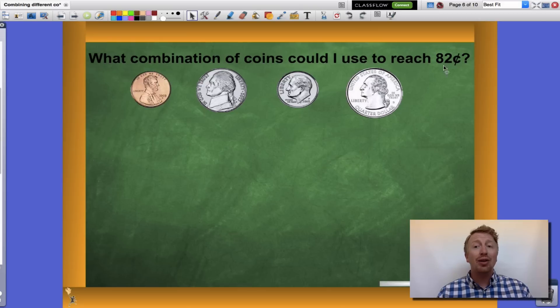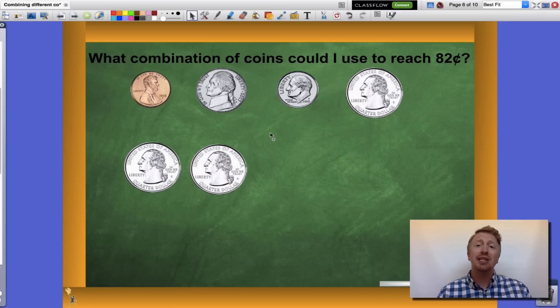Well, now that our value, 82 cents, has gotten much larger, there are way more ways that we can get there. I'm going to start with my largest denomination or value, which are quarters. Now three quarters together gets me to 75 cents: 25, 50, 75.